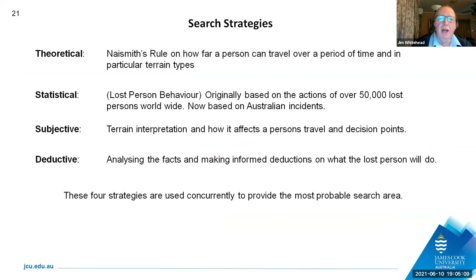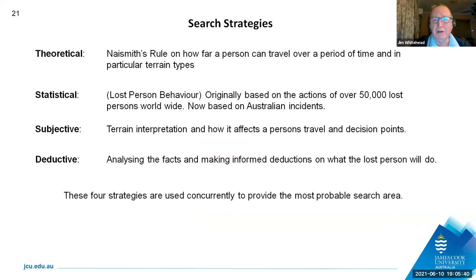My PhD is focused on homicide victims on land, because generally if they're in the ocean there's very little chance of finding them. For land search we have four strategies which we use overlaid — we don't use any of them individually. The first is theoretical, based on how far you could actually walk in a given timeframe and environment. Statistical is our lost person behaviour, and that's where it starts to tie into the PhD study. We have an ongoing Australian lost person database of people who have been lost and found, so we can work out statistically what they do, their characteristics and trends, helping us determine how best to search for them.